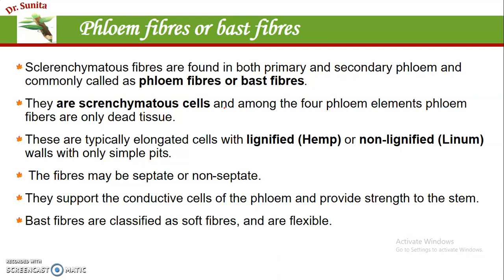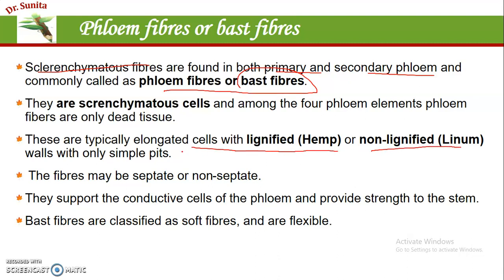The fourth component is phloem fibers. This is the only sclerenchyma cells present in the phloem; otherwise, the other three components are living cells. Phloem fibers are present in both primary and secondary phloem and are commonly known as bast fibers. These are elongated cells which may be lignified as in hemp, or non-lignified as in linum, having only simple pits. Fibers may be septate or non-septate.